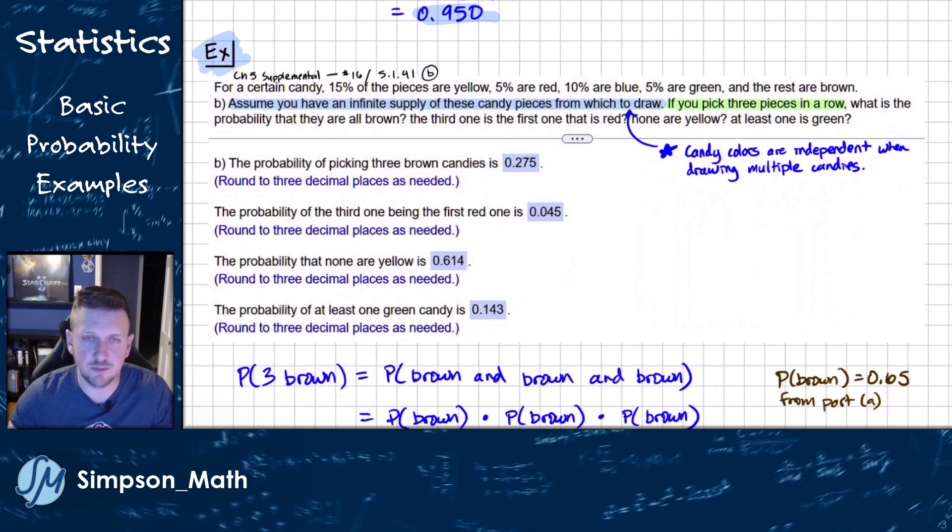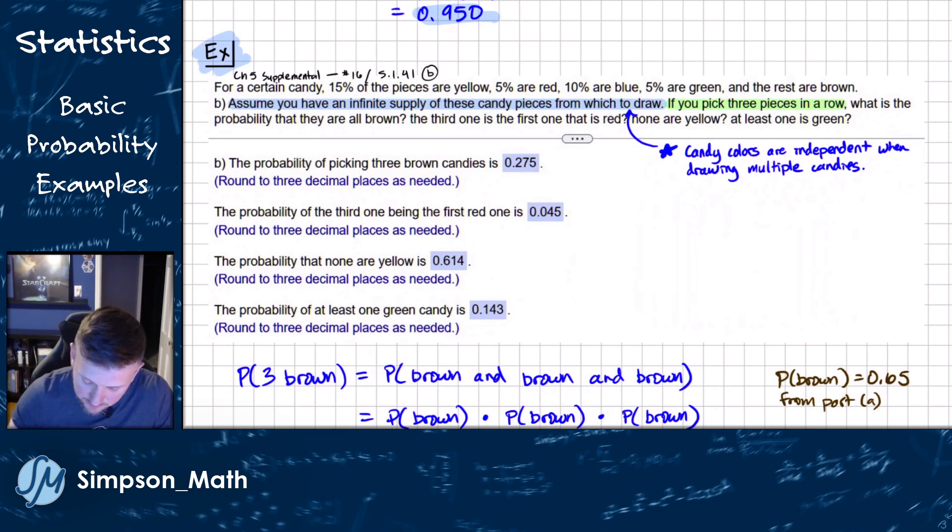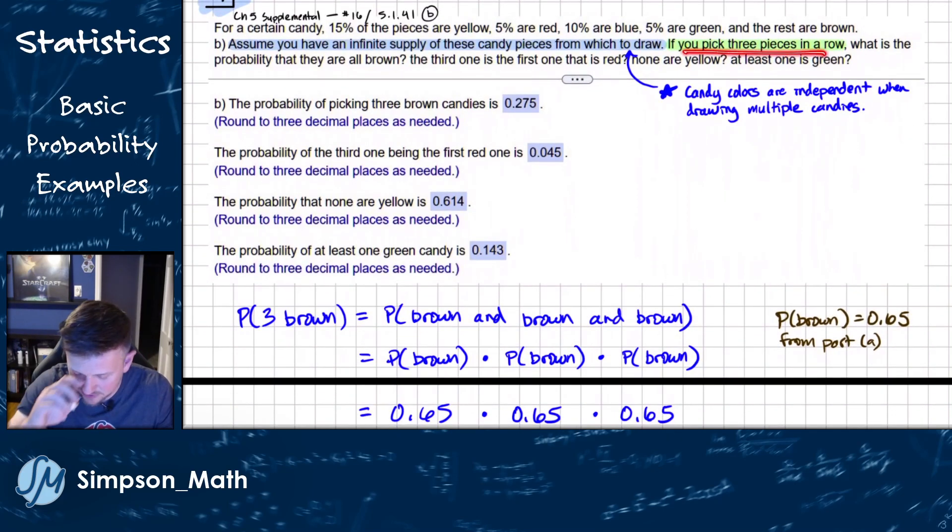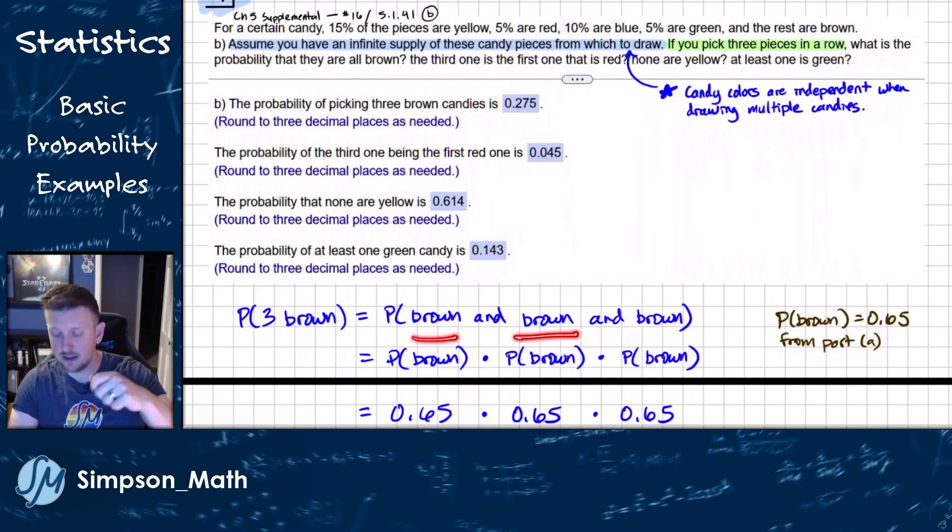All right. So the probability of picking three brown candies. The idea here is we're drawing three pieces in a row. So imagine I reach in this infinite bag of candy and I pull out a brown and then I'm going to pull out a brown and then I'm pulling out a brown. Notice I'm using the and here because every time I pull out a brown, I'm making a more specific, a harder to happen, a rarer event. As we discussed last time, that's going to lend to an and situation or a multiplication thing, because it's going to make the numbers get smaller.